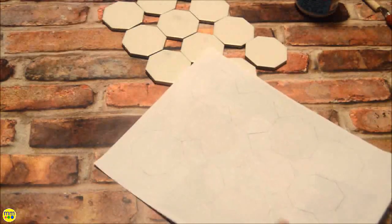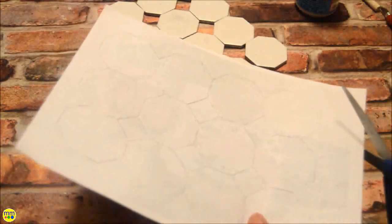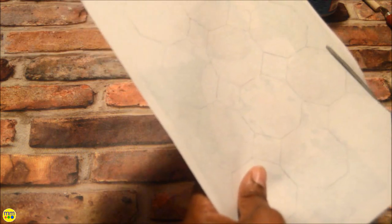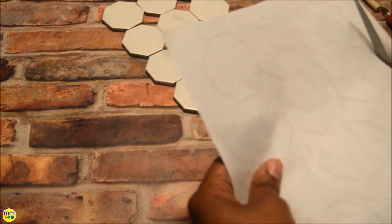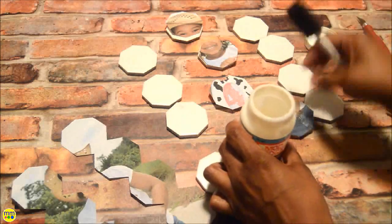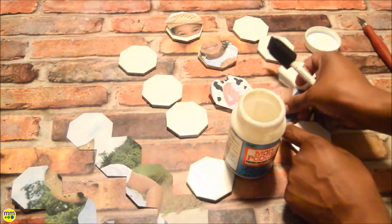Now, cut out each tile. Add a piece of the photo onto the tile using a foam brush and Mod Podge. Allow it to dry.